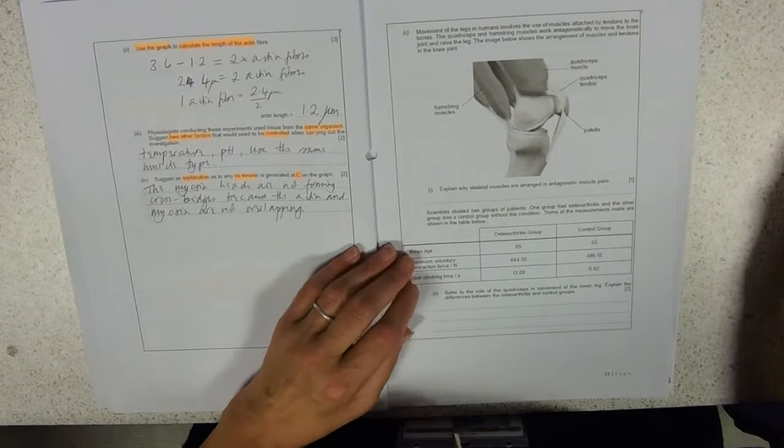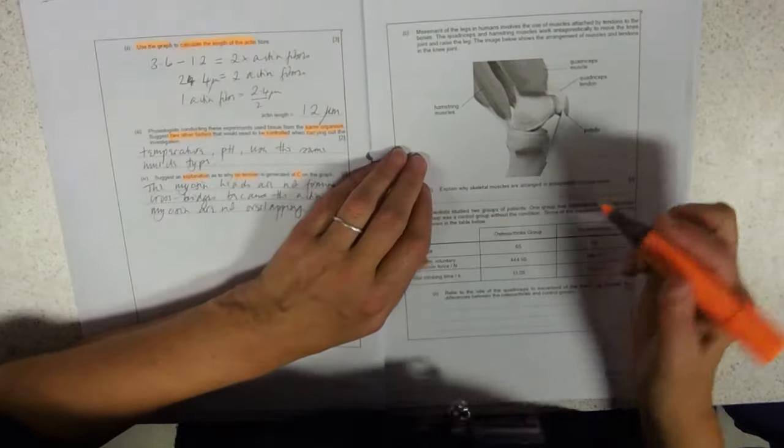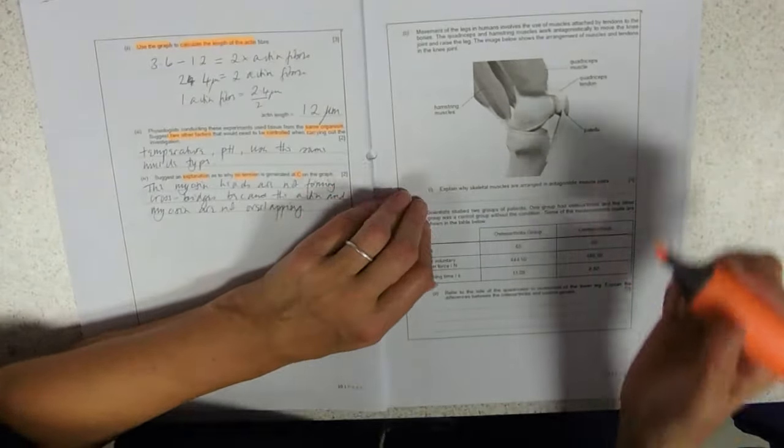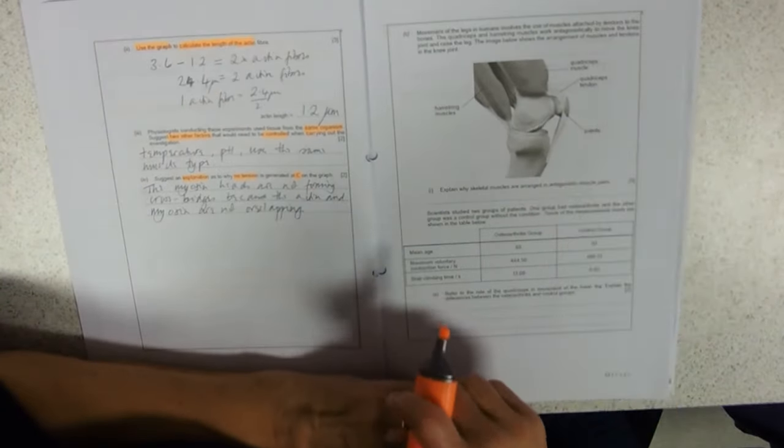Movement of the legs in humans involves the use of muscles attached by tendons. Your example on the syllabus is the elbow. The knee is a hinge joint. It works just the same way and your fingers are the same.